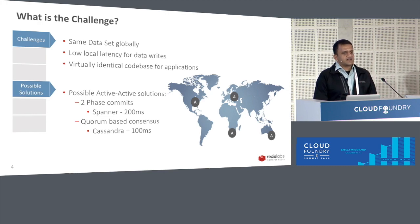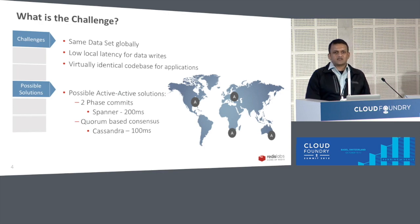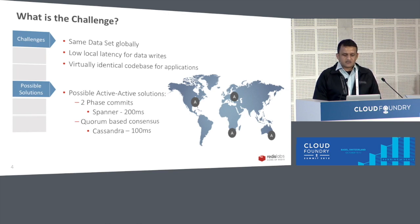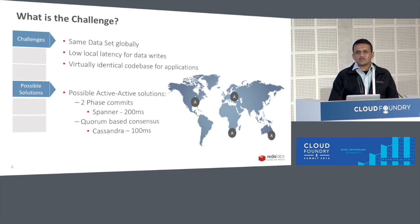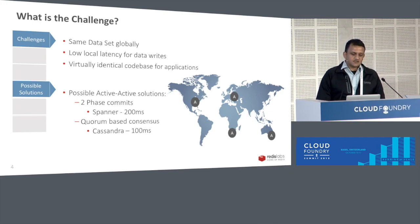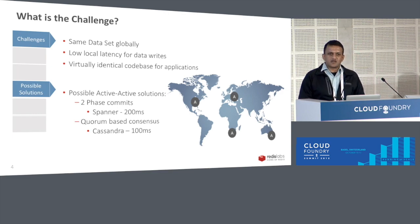As a large organization with multiple Cloud Foundries across the planet, you want to keep the delta of your application in various regions and continents very small. You want to use the same code base and literally just change the CF target before you push the application — without introducing any additional logic as you push your geo-distributed applications across multiple Cloud Foundries.